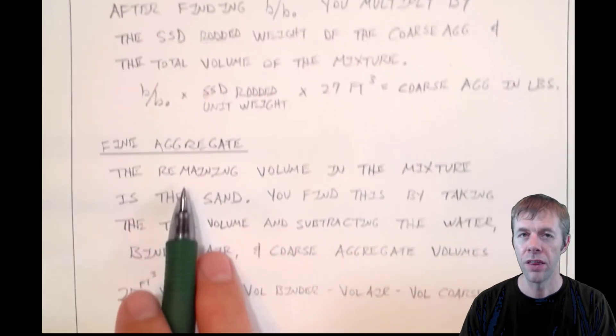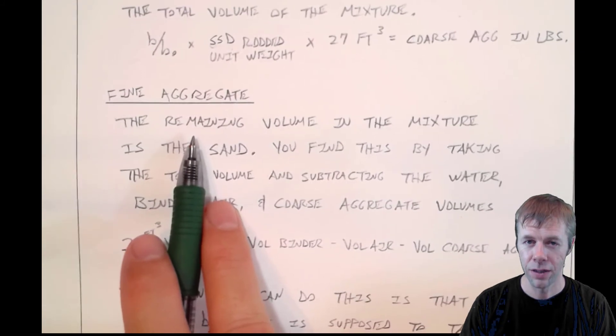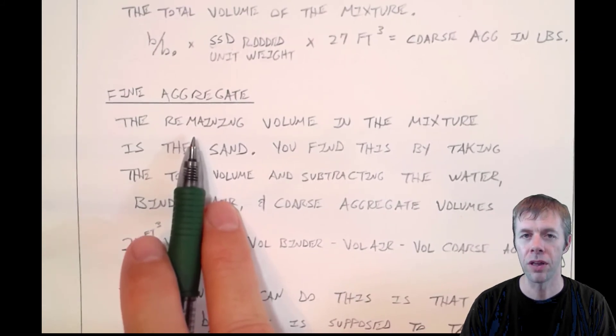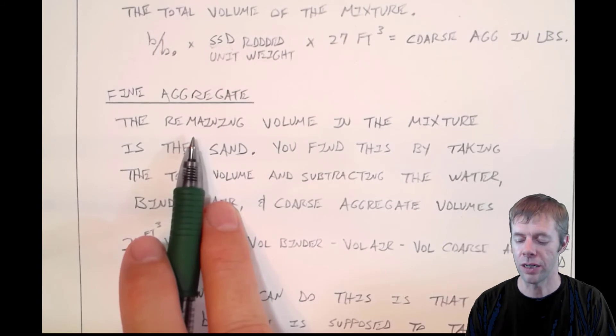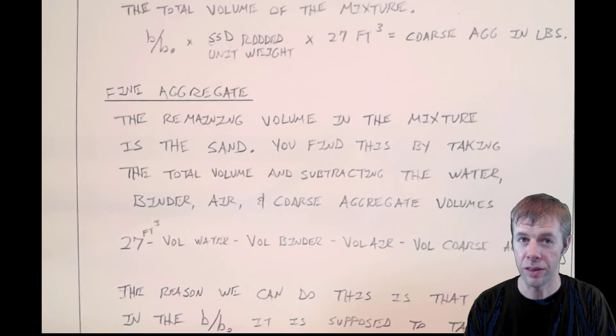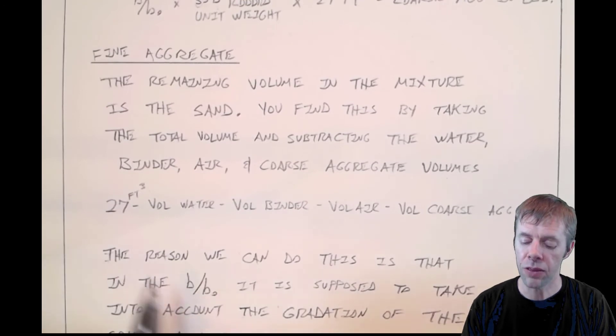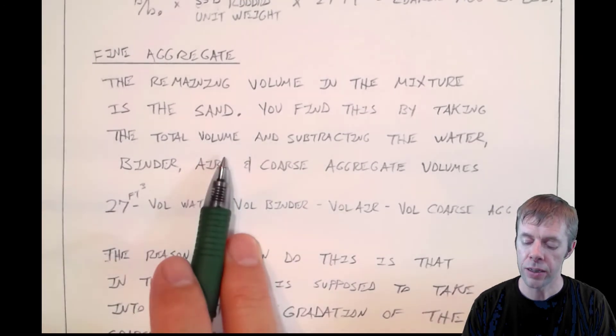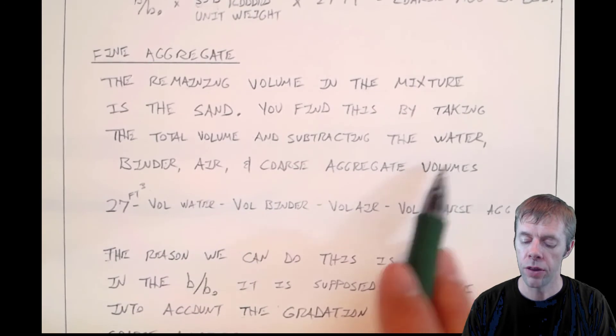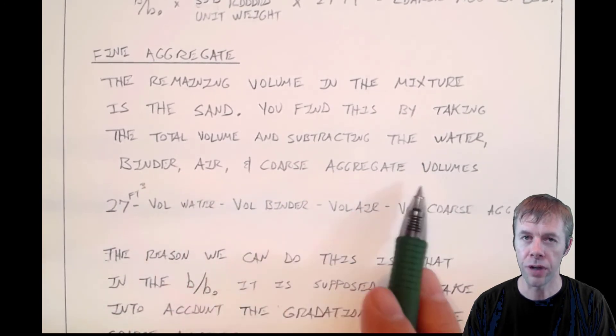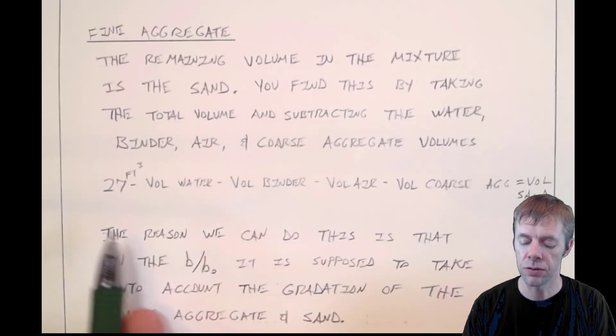Finally, the last thing you design in ACI 211, the last material you come up with, is the fine aggregate. This is the remaining volume of the material in the mixture—they make it up with sand. You find this by doing simple math: you basically take the total volume and subtract the water, the binder, the air, and the coarse aggregate volumes.